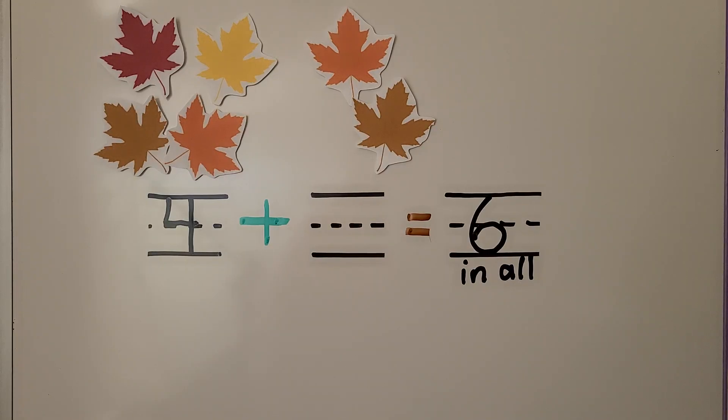Here we have some leaves. We need to use the pictures of the leaves to answer the problem. Four leaves are on the ground. Some leaves fall from the tree. Now there are six leaves on the ground. How many leaves fell from the tree?